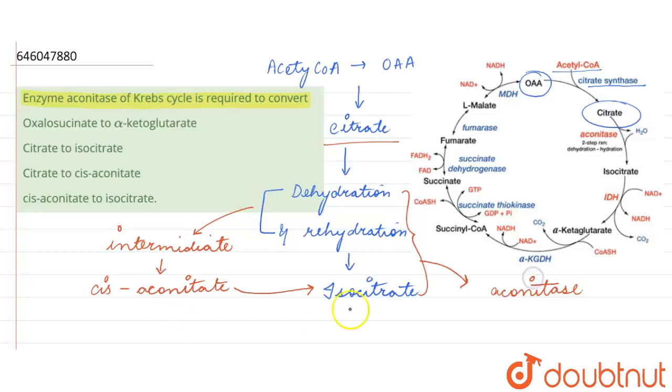So basically aconitase is converting citrate into isocitrate by a two-step process, by dehydrating it first and then rehydrating it and making an intermediate product which is called the cisaconitate which is finally converted into isocitrate. So our correct answer here will be citrate to isocitrate. Option two is the right answer.